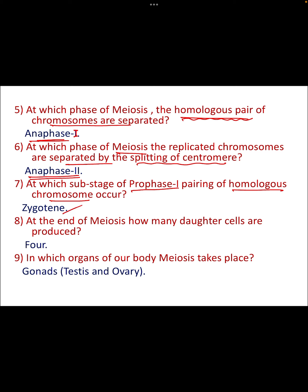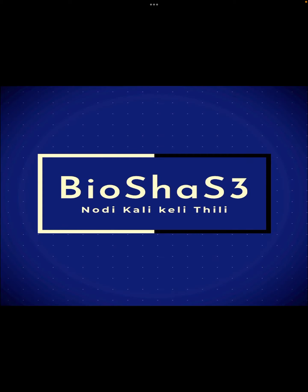At the end of meiosis, how many daughter cells are produced? That is 4. In which organs of our body does meiosis take place? That is in the gonads — the testes and ovary. I hope this video was helpful for you.